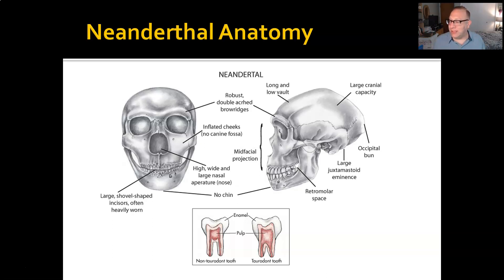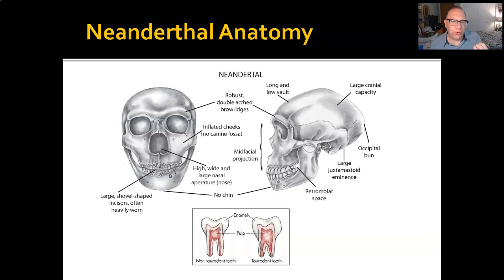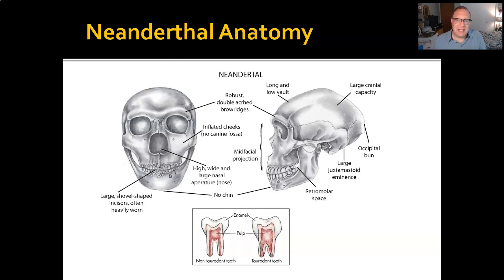Really interestingly, they have teeth that are kind of unique. We call their teeth taurodont because they have extremely short roots but a long chamber for pulp. Whereas ours go in quite deep and separate, theirs also go in deep but don't separate until quite far out. Not sure the reason why, but it's an interesting variation that further points to the fact that they are a different species than us.